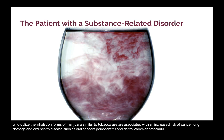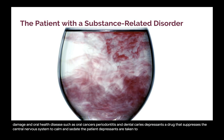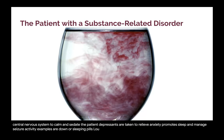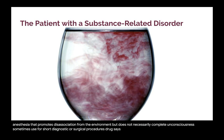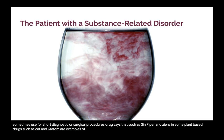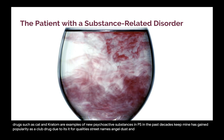Depressants: a drug that suppresses the central nervous system to calm and sedate the patient. Depressants are taken to relieve anxiety, promote sleep, and manage seizure activity. Examples include downers, sleeping pills, ludes, roofies, and alcohol. Dissociative anesthetics: a form of general anesthesia that promotes dissociation from the environment but does not necessarily produce complete unconsciousness, sometimes used for short diagnostic or surgical procedures. Drugs such as synthetic cannabinoids, synthetic cathinones, ketamine, piperazines, and some plant-based drugs such as khat and kratom are examples of new psychoactive substances. Ketamine has gained popularity as a club drug due to its euphoric qualities; street names include angel dust and special K.